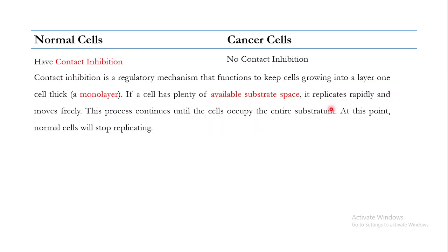This process of free movement and rapid replication continues until the cells occupy the entire substratum. Once the whole substratum is occupied, normal cells stop replication because they come into contact with each other — hence the term 'contact inhibition.' Cancer cells do not follow contact inhibition, meaning they do not grow in a monolayer.